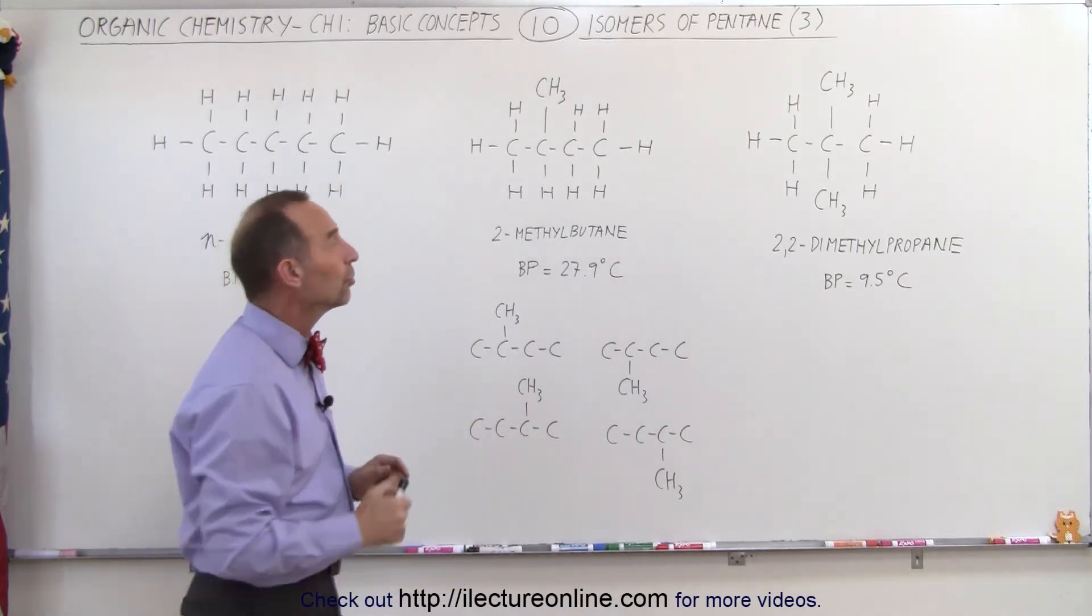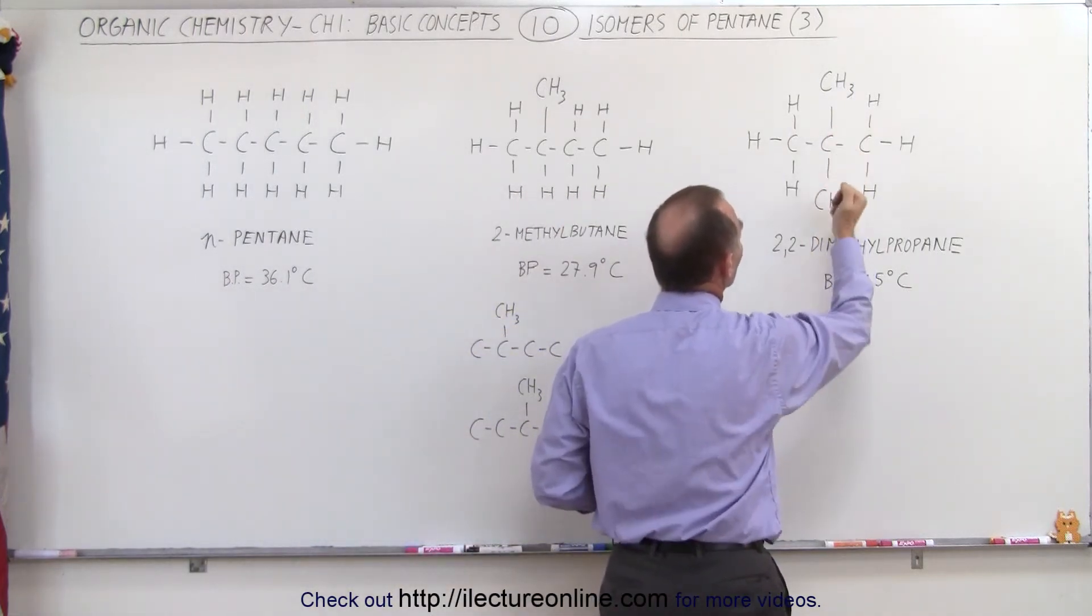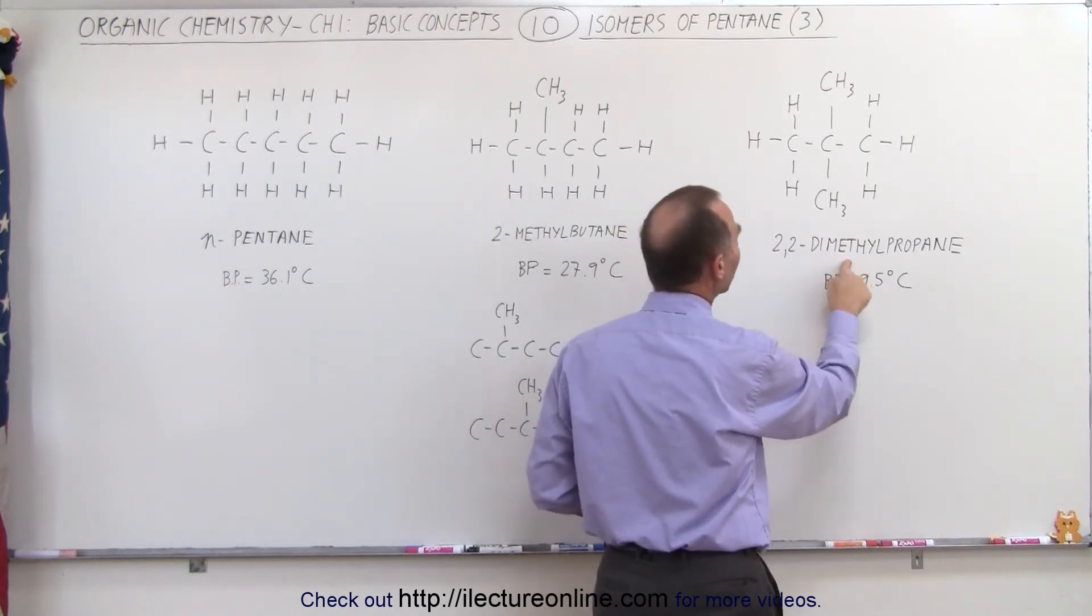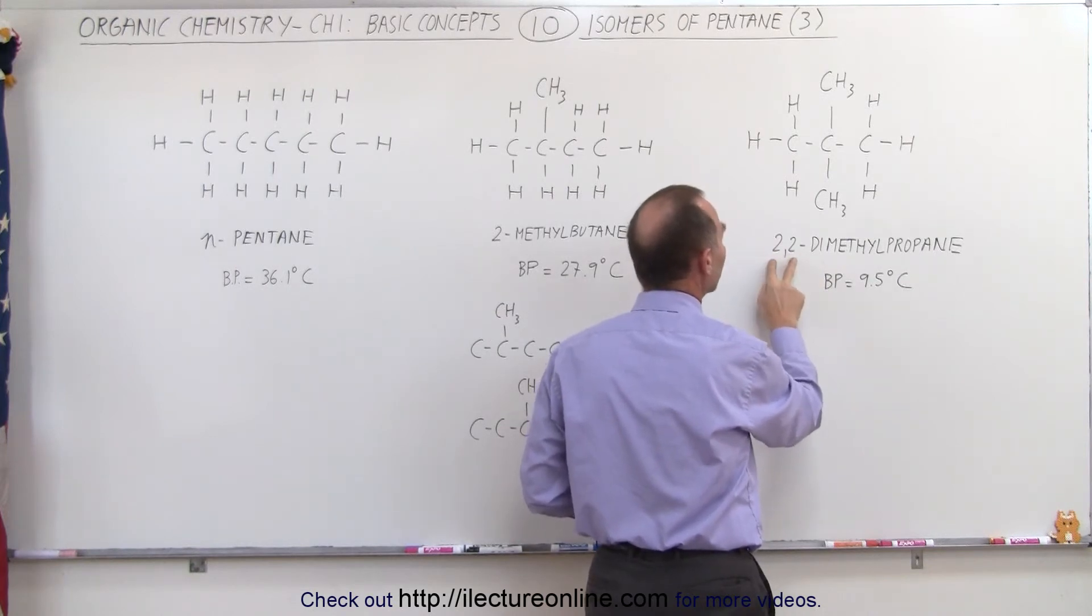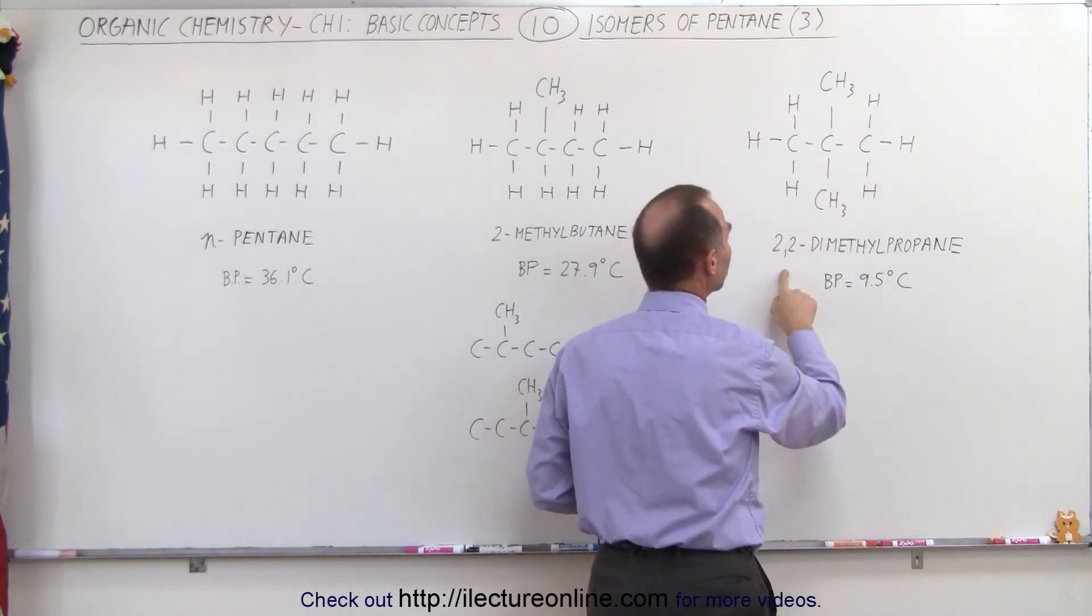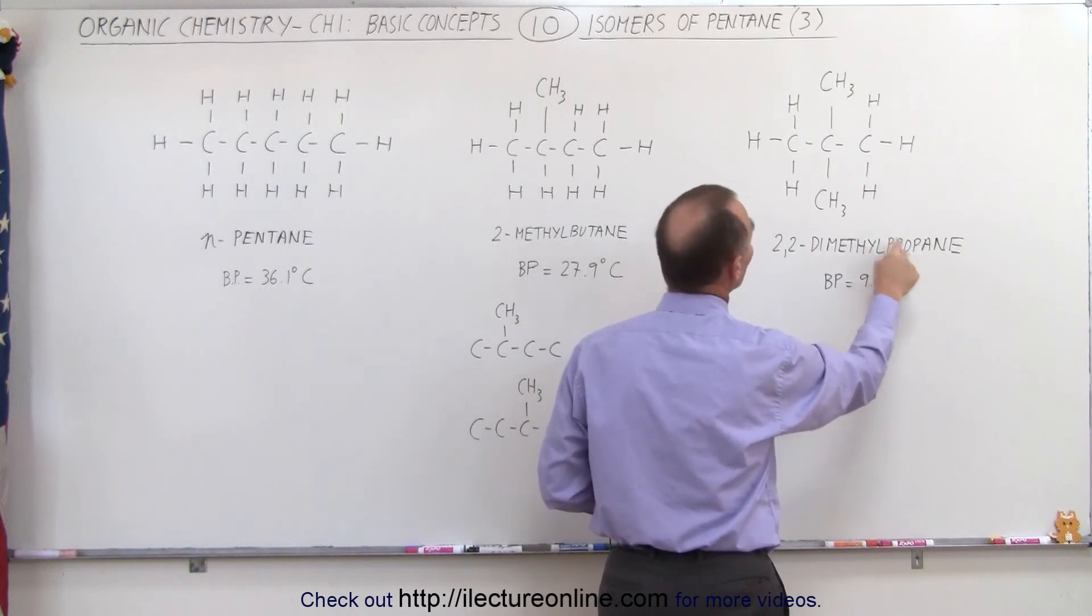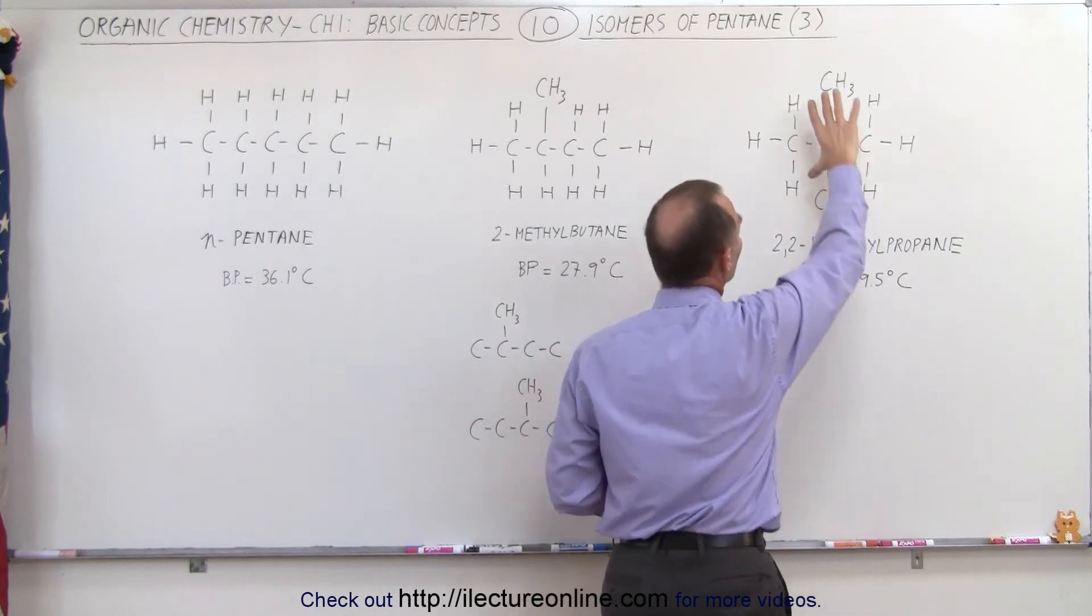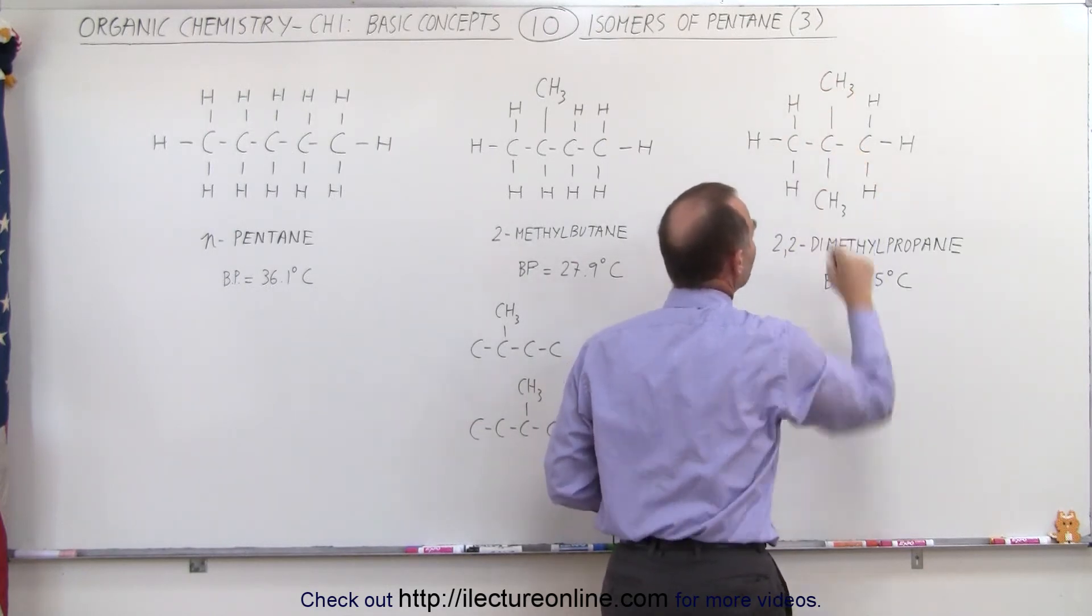But there's a second thing you can do. You can attach another methyl group on the same carbon on the other side at the same time. Now we have what we call 2,2-dimethylpropane. 2 and 2 because you want to indicate that both of the alkyl groups, both of the methyl groups, are connected to the second carbon, and di means that there's two of them, and propane now means there's only three carbons connected in a linear fashion where the other methyl groups are then connected to that chain on the middle carbon.